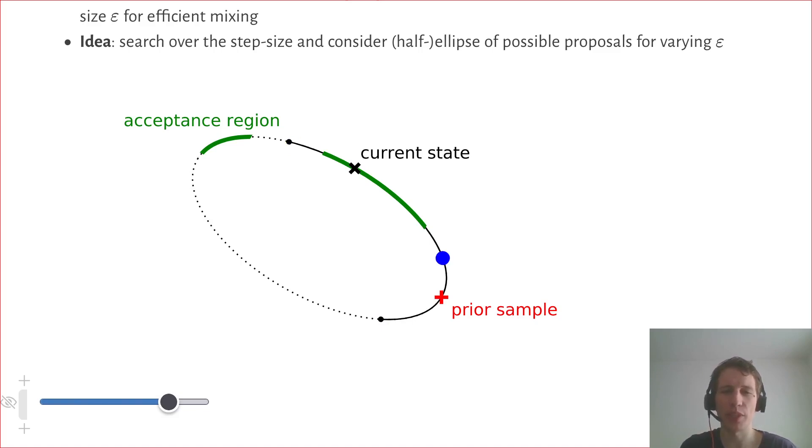And in the next step we will just sample from the solid part of the ellipse. So that's done here. The proposal is still not accepted. We shrink the bracket further, and now this proposal is accepted and will be the next state of the Markov chain.